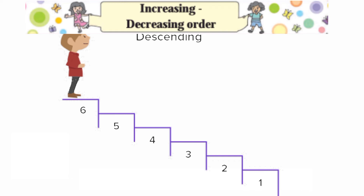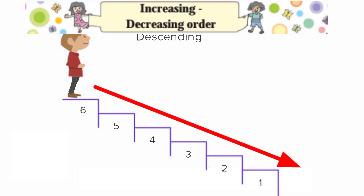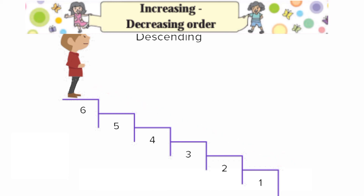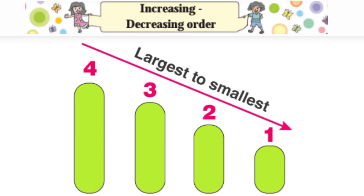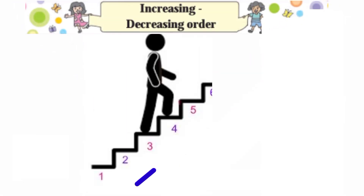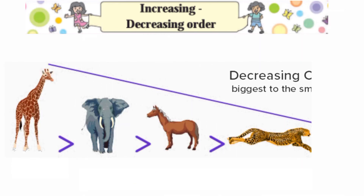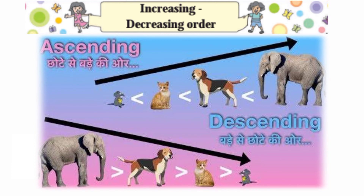Now we can see what is decreasing order. Decreasing order means from biggest to smallest — bade se chote ki taraf. Here you can see four, three, two, one. This is the example of decreasing order — bade se chote ki taraf. And this is the example of increasing order — chote se bade ki or.